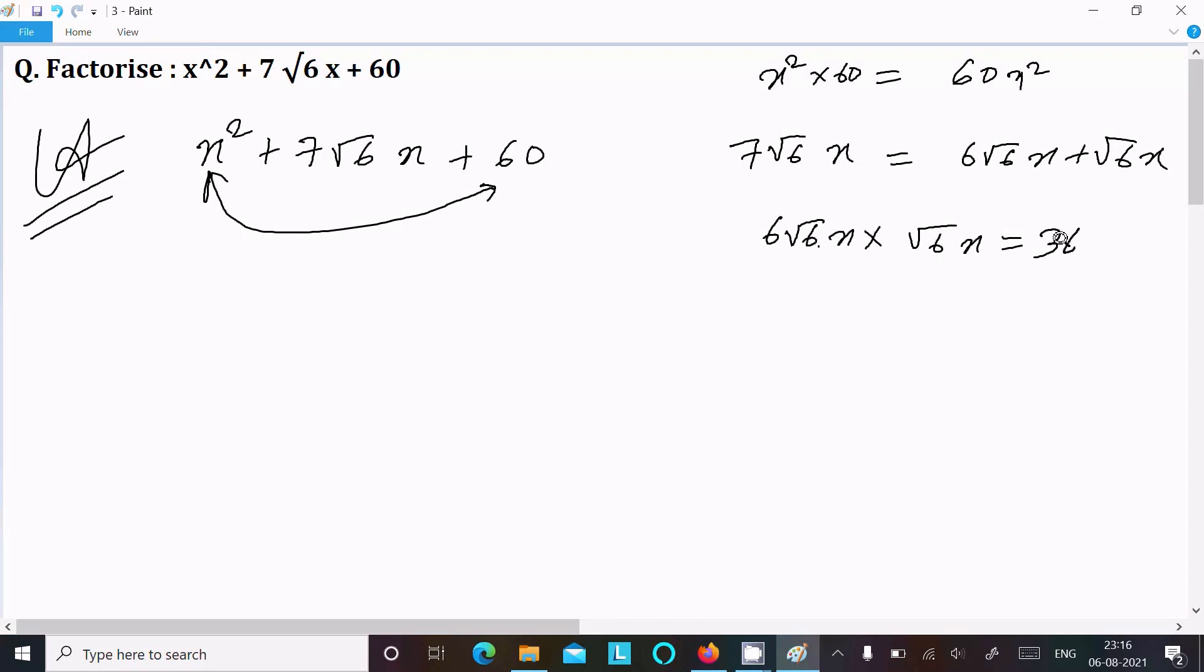Now you can see 36x² and 60x² both are not same, so it's not equal. We cannot accept this one or we cannot take the combination of 6√6 + √6.